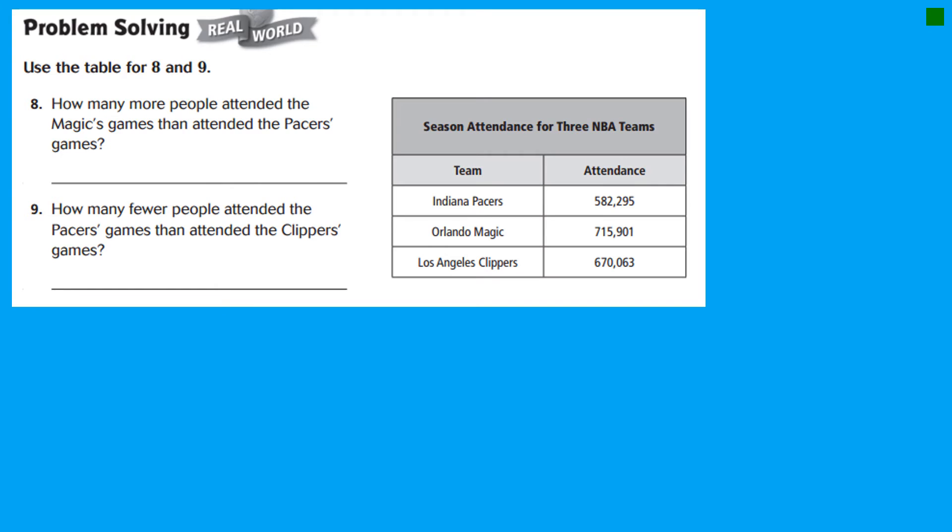Down to the problem solving page. It says, use the table for 8 and 9. Here is the table. I'm going to look at the table before I even start this. The title of the table is Season Attendance for 3 NBA Teams. The Pacers, Orlando Magic, and the Clippers. And here is the attendance. Boys and girls, you know what attendance means in school. It means if you're in school that day or not. So the attendance at a basketball game is they count how many people came to that game.